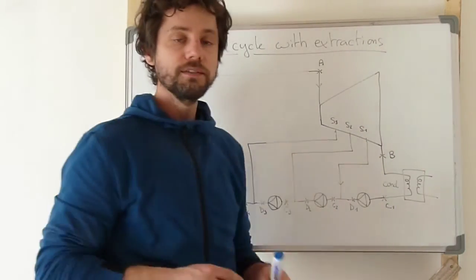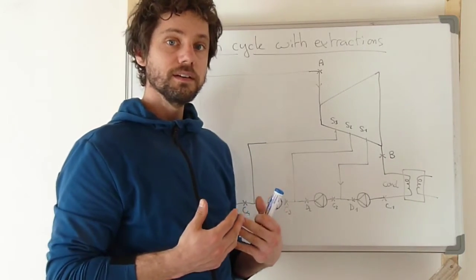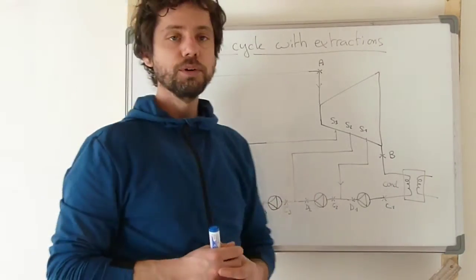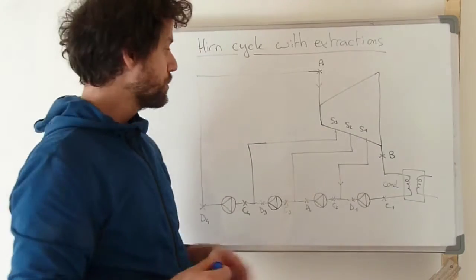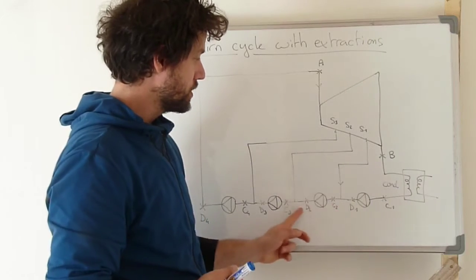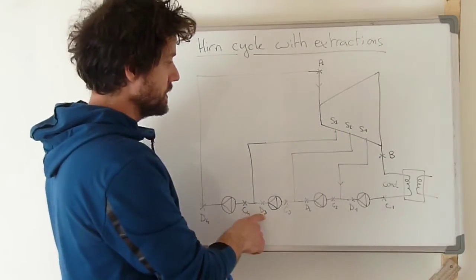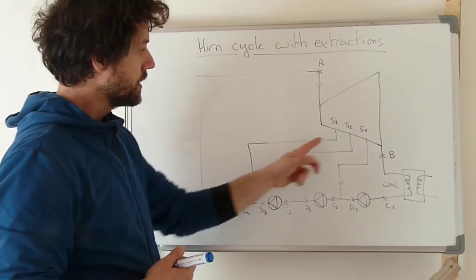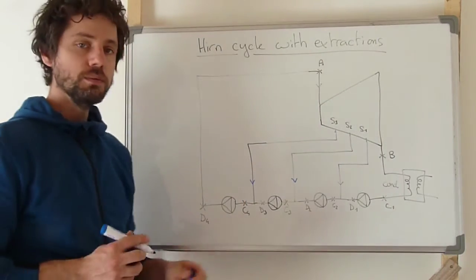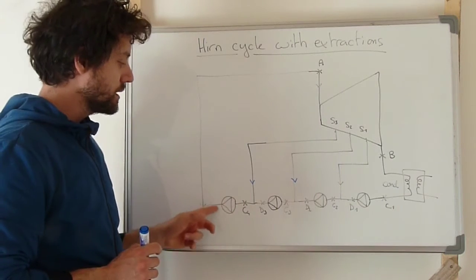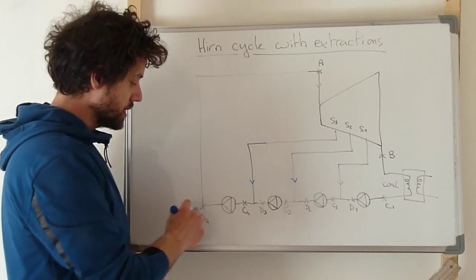The fluid coming from D1 will be mixed with the fluid extracted at S1. The specific enthalpy of the flow from S1 is much higher than that from D1, and this mixture increases the specific enthalpy of the combined flow. Similarly, after mixing at the pressure of extraction S2 we reach point C3, then the third pump increases pressure to PS3 at point D3, which is mixed with the extraction from S3 to give point C4. Finally, the last pump increases the pressure to the high pressure of the system, corresponding to point D4.